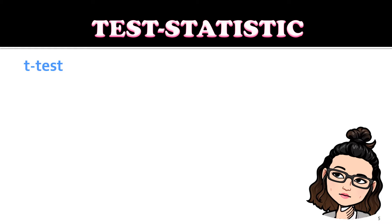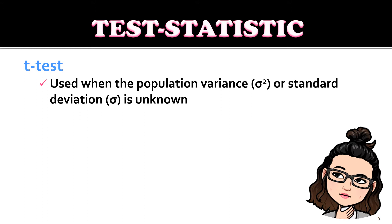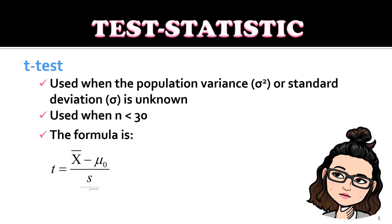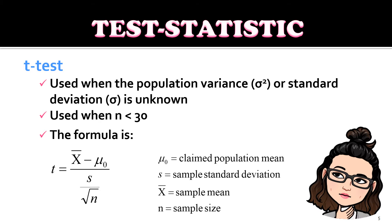We also have the T-test, which is used when the population variance or the standard deviation is unknown. It is also used when the sample size is less than 30. In the T-test formula, mu sub 0 is still the claimed population mean, S is the sample standard deviation, x-bar is the sample mean, and n is the sample size. The population standard deviation from the Z-test is simply replaced by the sample standard deviation S.